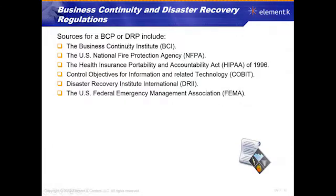Sources for business continuity or disaster recovery include the Business Continuity Institute, the U.S. National Fire Protection Agency, the Health Insurance Portability and Accountability Act (HIPAA), Control Objectives for IT (COBIT), the Disaster Recovery Institute International (DRII), and the U.S. Federal Emergency Management Association (FEMA). These are agencies or regulations that we can turn to for disaster recovery and business continuity information and guidance.